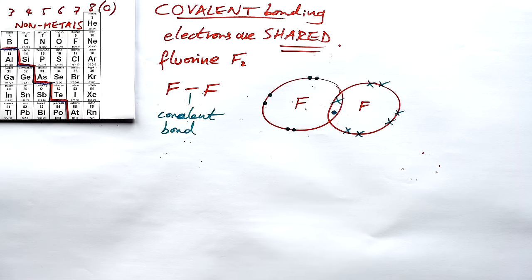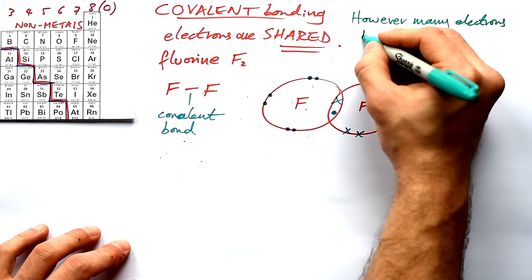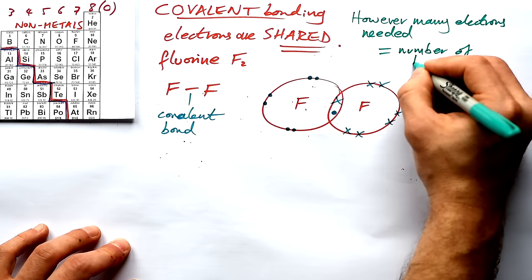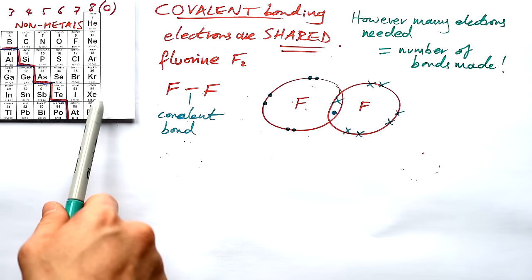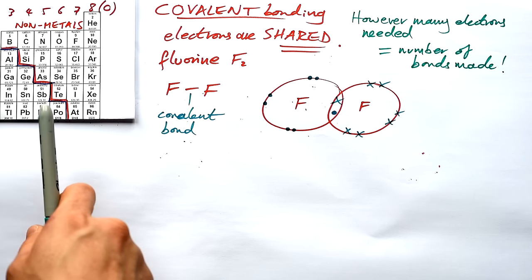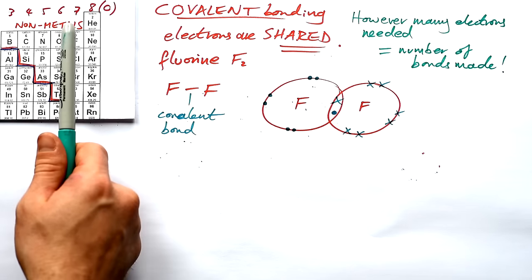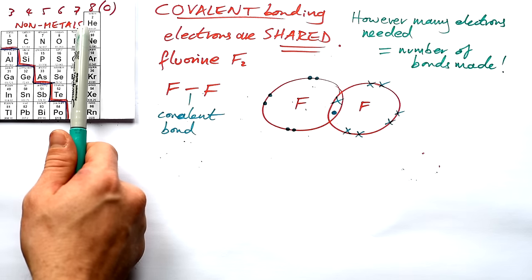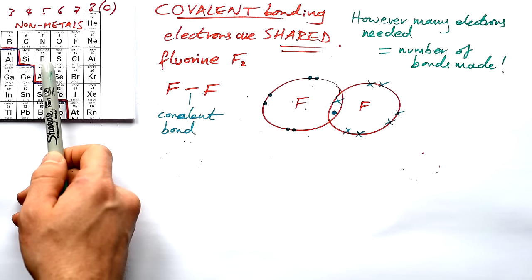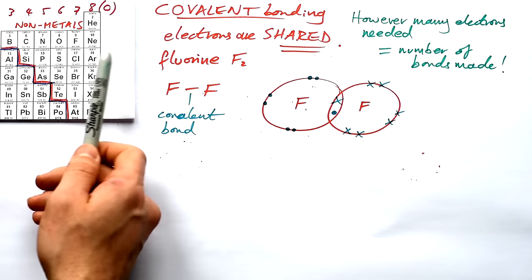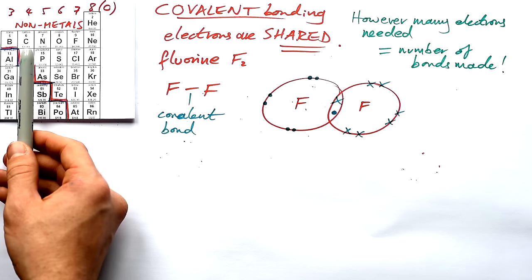Here's a quick tip: however many electrons an atom needs, that equals the number of bonds it makes. Group seven halogens need one more electron, so they make one bond. Group six elements like oxygen and sulfur need two, so they make two bonds. Nitrogen and phosphorus in group five need three, so they make three bonds. Carbon in group four needs four, so it makes four bonds.